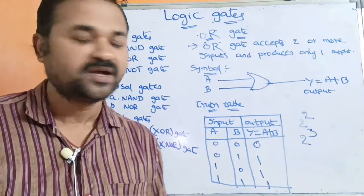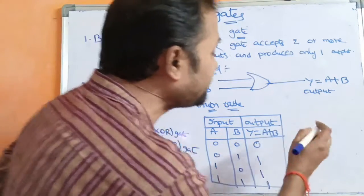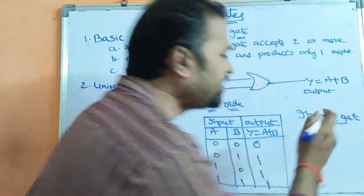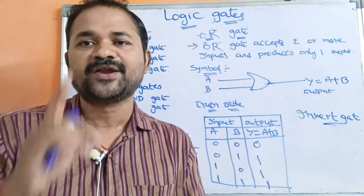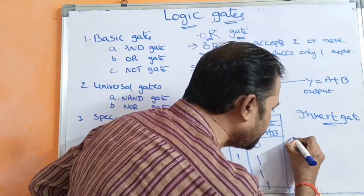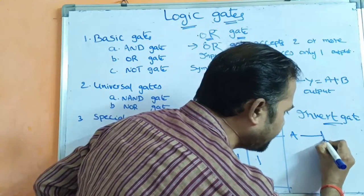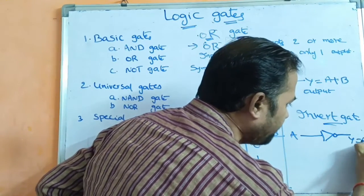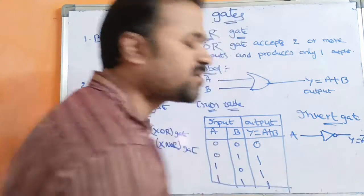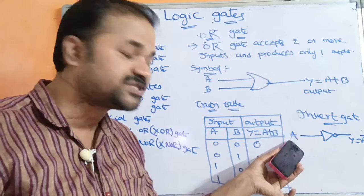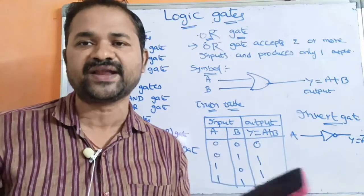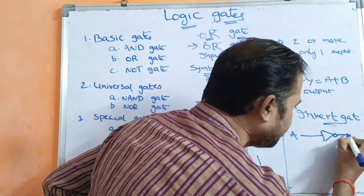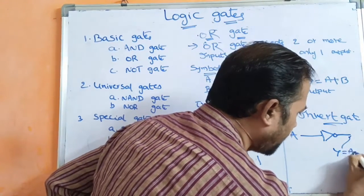Now let us see about NOT gate. NOT gate can also be called as invert gate. It simply complements the corresponding input. NOT gate accepts only one input — let A be the input. Then the NOT gate output is Y is equal to A bar. So NOT gate simply performs the complement operation.